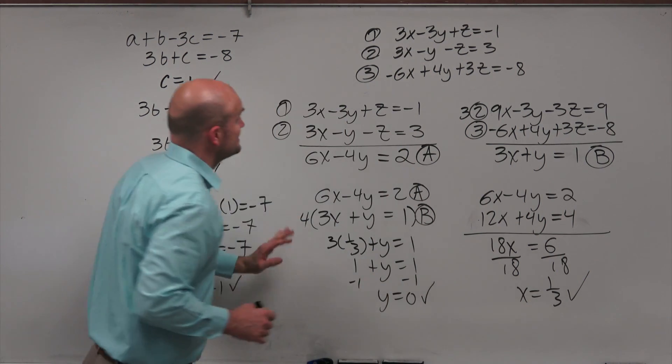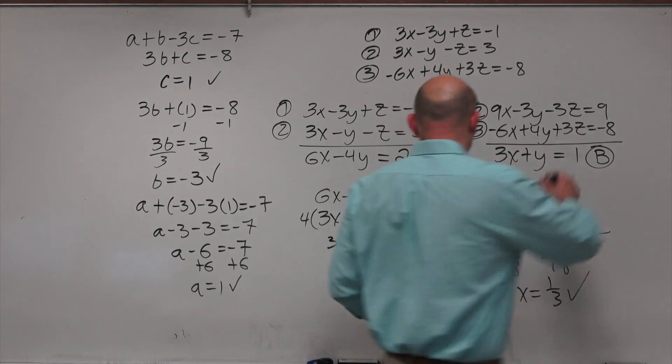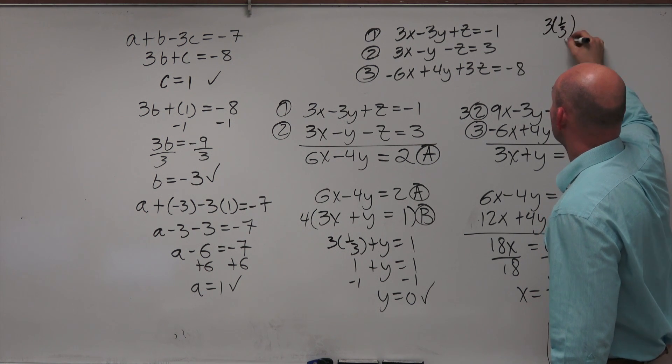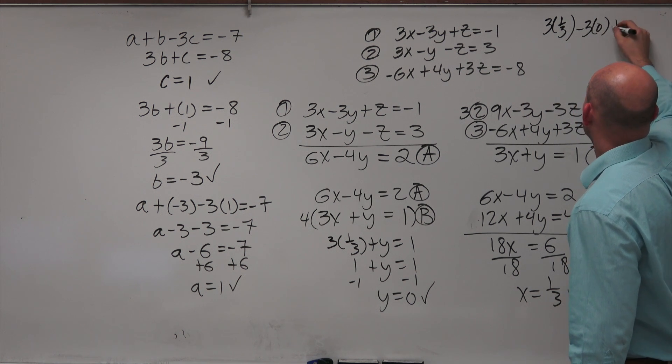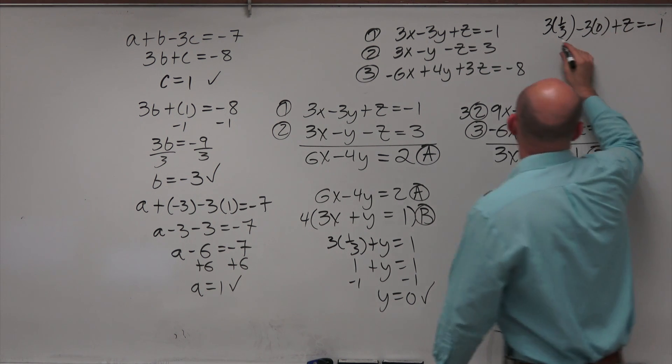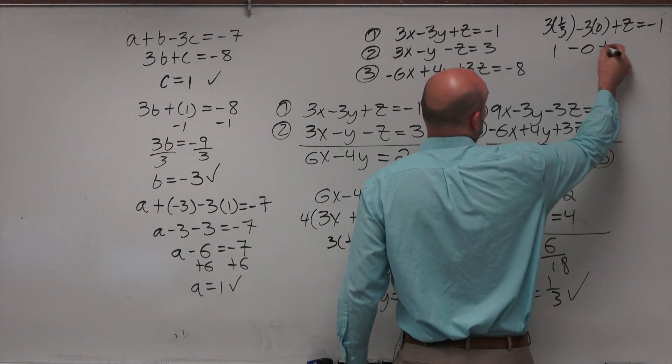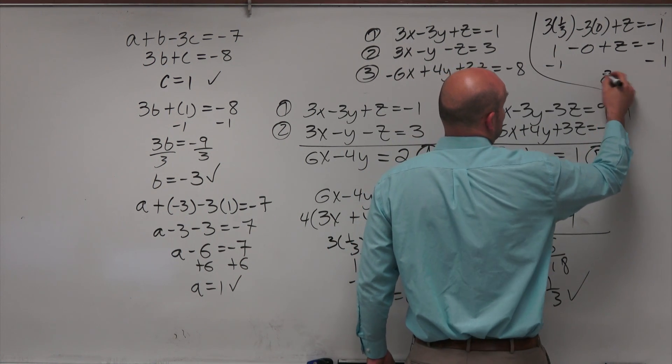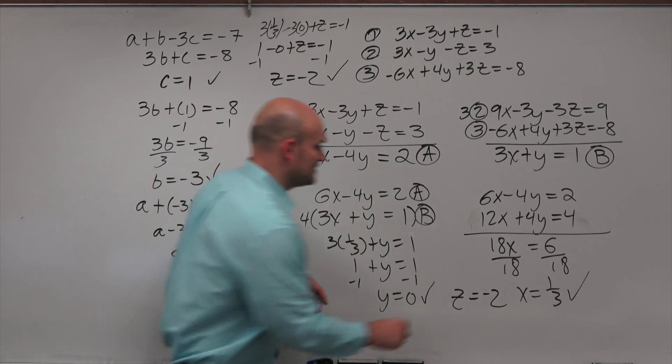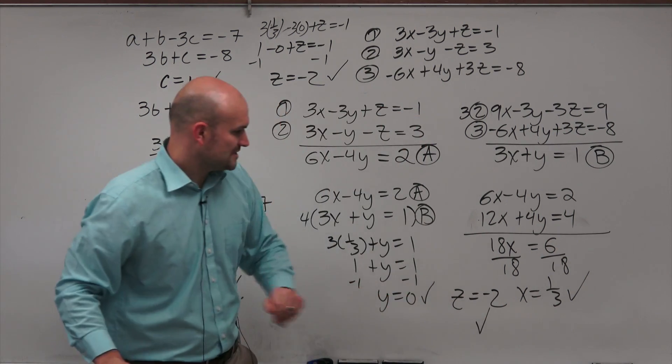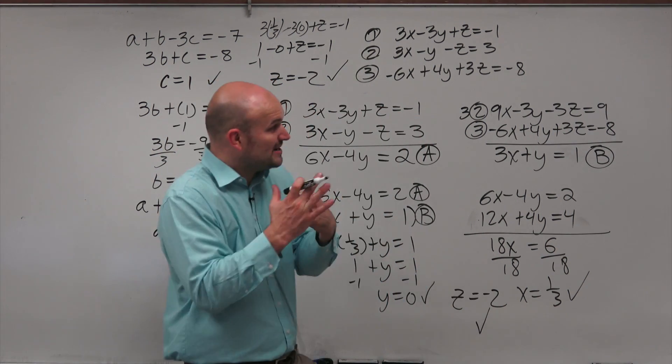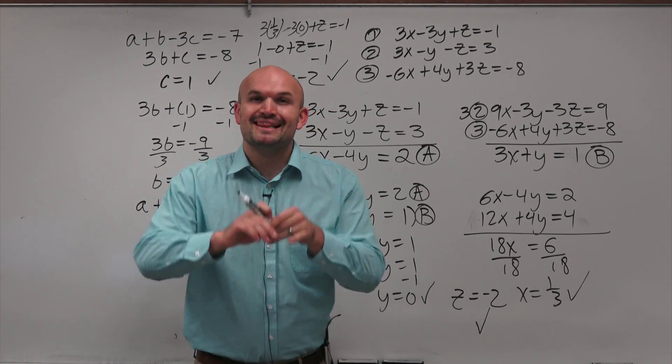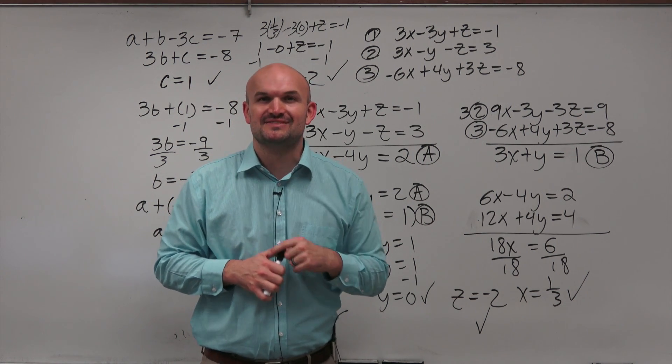So now to find the third one, I need to plug this into one other equation. I think I got a little room up here. So let's do that. Let's plug them into the top equation. So I have 3 times 1 third minus 3 times 0 plus z equals negative 1. So 3 times 1 third is 1 minus 0 plus z equals negative 1. Subtract the 1, subtract the 1. And I get z equals negative 2. So now you can see I have my three solutions. y equals 0, z equals negative 2, x equals 1 third are the three values that make each and every one of those equations true. There you go, ladies and gentlemen. That is how you solve a system of equations with three variables. I'll see you in the next video. Cheers.